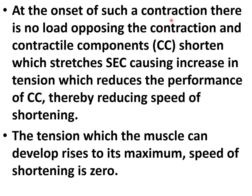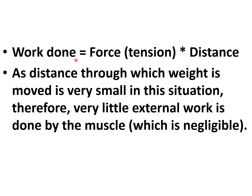At the onset of isometric contraction there is no load opposing the contraction, and the contractile components shorten, which stretches the series elastic component, causing an increase in tension. This reduces the performance of the contractile component, reducing the speed of shortening, and the tension developed in the muscle rises to its maximum while the speed of shortening becomes zero. Work done equals force multiplied by distance; since the distance through which the weight is moved is very small, very little external work is done by the muscle — almost negligible.